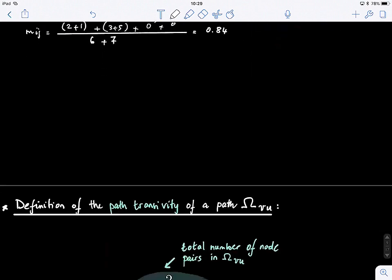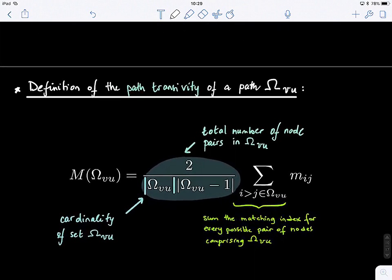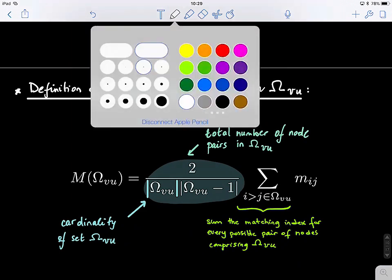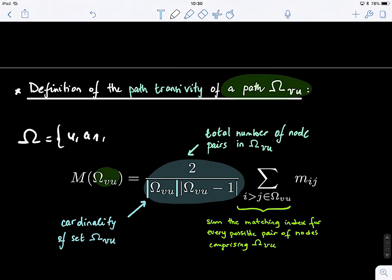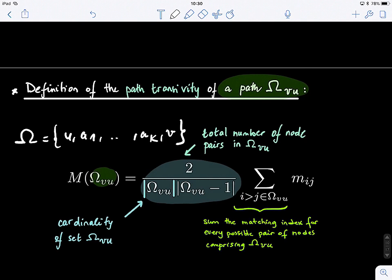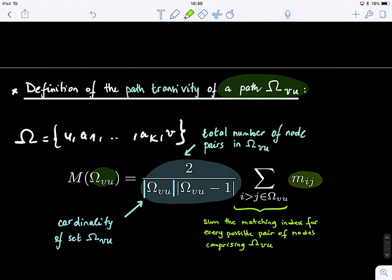To generalize before the break — the definition of path transitivity for a whole path. We're not looking at just two nodes, but a whole sequence: our omega sequence, going from node U through a1, a2, ... ak until V. We simply sum up all the matching indices between every possible pair of nodes inside this path.